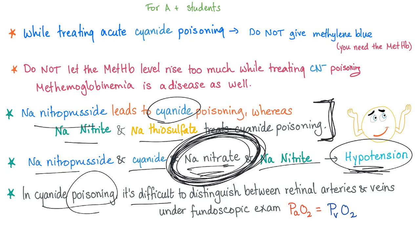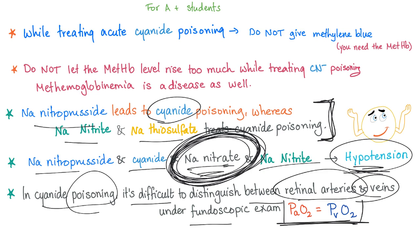A brilliant clinical point: in cyanide poisoning it is difficult to distinguish between retinal arteries and retinal veins on fundoscopic exam. Why? Because the partial pressure of oxygen in the artery equals the partial pressure of oxygen in the vein, and oxygen is what gives blood vessels their bright color. Normally arteries are bright red and veins are dark, but in cyanide poisoning both appear bright.